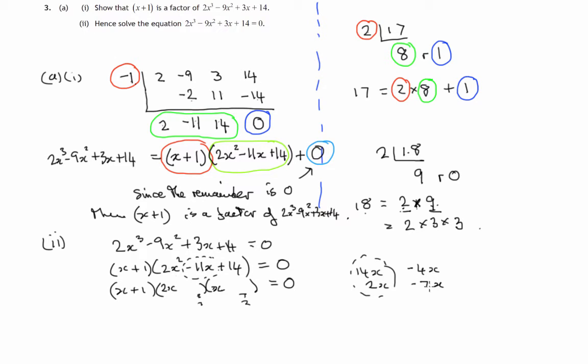Negative 4x, negative 7x is negative 11x. So we have a negative 7 and a negative 2, giving us a negative 4x and a negative 7x. And just check that the last, when you multiply negative 7, negative 2, you do get positive 14. That works out. So always check back.